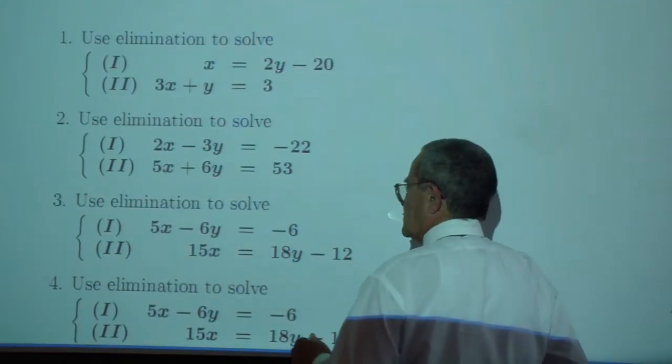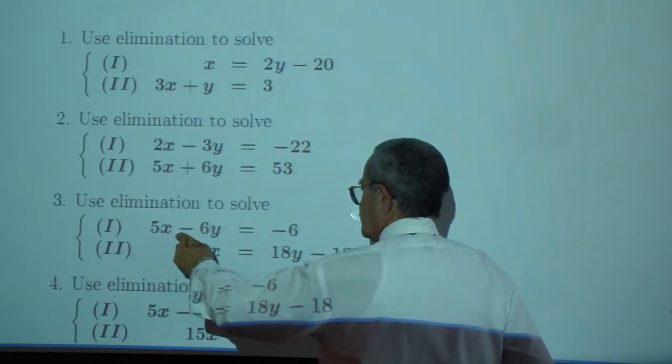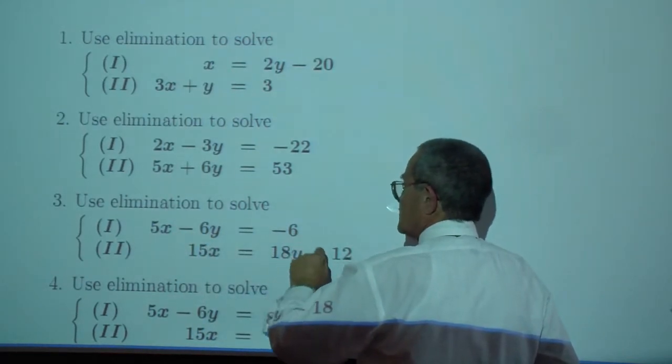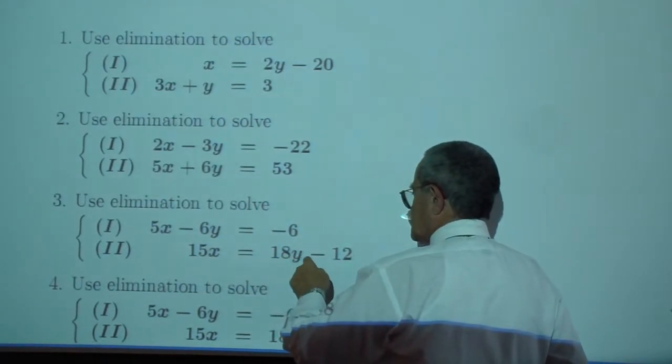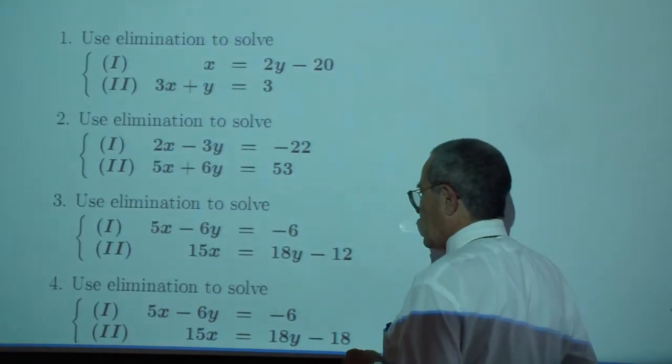Solve by elimination or addition. 5x minus 6y is negative 6. 15x is 18y minus 12.